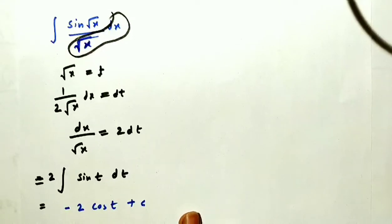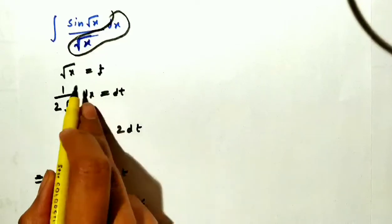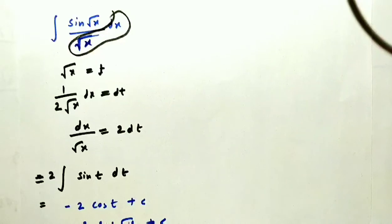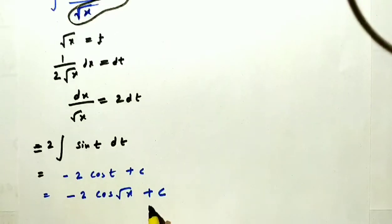We had assumed t as √x, so you will get your answer which is -2cos(√x) + c. So this is your final answer.